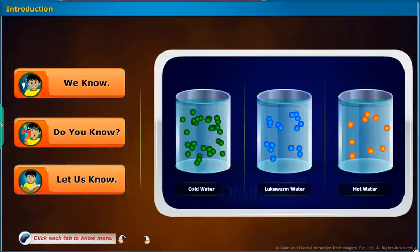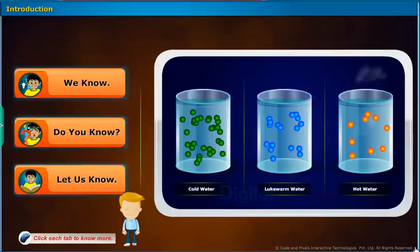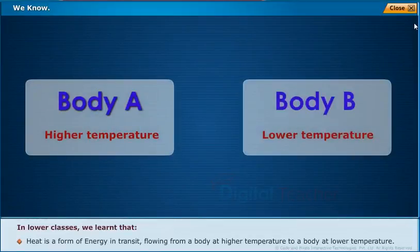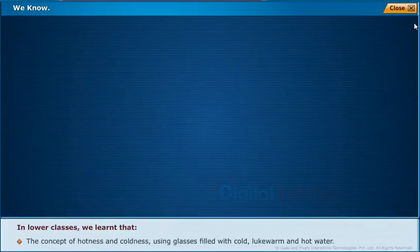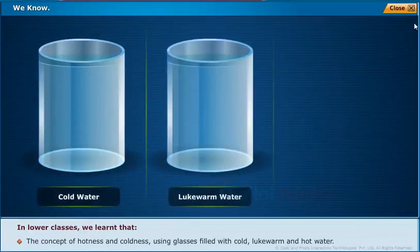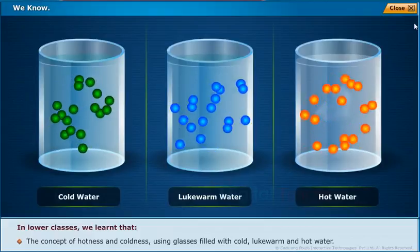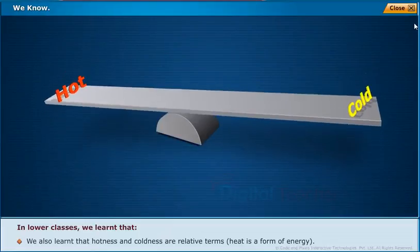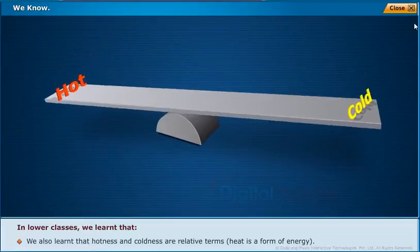In lower classes we learned that heat is a form of energy in transit, flowing from a body at higher temperature to a body at lower temperature. We explored the concept of hotness and coldness using glasses filled with cold, lukewarm and hot water. We also learned that hotness and coldness are relative terms and that heat is a form of energy.